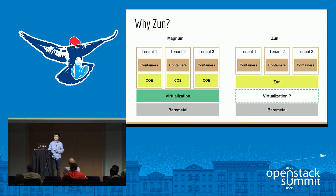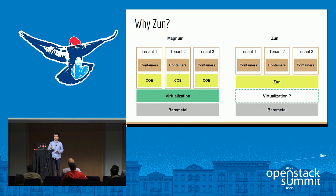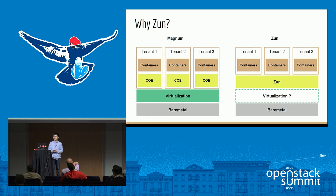Zun also helps relieve the requirement that containers must run in virtual machines. In Zun, it is not assumed that containers have to run in VMs — containers can run on bare metal. This is useful because, for example, if the cloud has a single tenant, it doesn't make sense to run all containers in virtual machines. Or if the cloud uses a container runtime provided by Hyper.sh, which has strong isolation capabilities, it also doesn't make sense to use virtual machines as isolators.